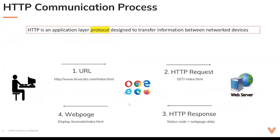Let's look at the communication process for HTTP. Here again, it is an application layer protocol. I've got this user and he or she wants to go to ilovecats.com. So they type in HTTP www.ilovecats.com, and then their browser goes over to the ilovecats website. The web server then responds back with an HTTP response with a status code and the web page data, goes to the browser, and then this user gets to see his or her ilovecats web page — so they can read all they want about cats.